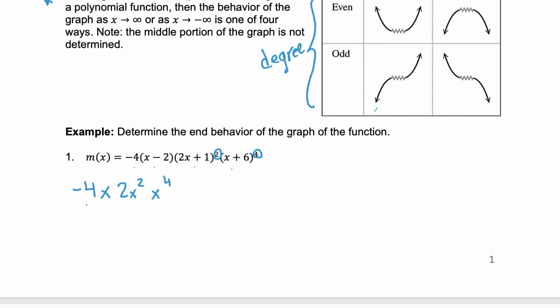Now, when we multiply these, we can multiply our coefficients, negative 4 and 2, which is negative 8. And then we combine our variables. x times x² times x⁴ is x⁷. Okay. So, looking at our degree, we have a degree 7, right? Our exponent is 7. And that is an odd number. And our coefficient is negative 8. So, we have an odd negative. An odd negative is going to be this situation, where the left goes up, the right goes down.